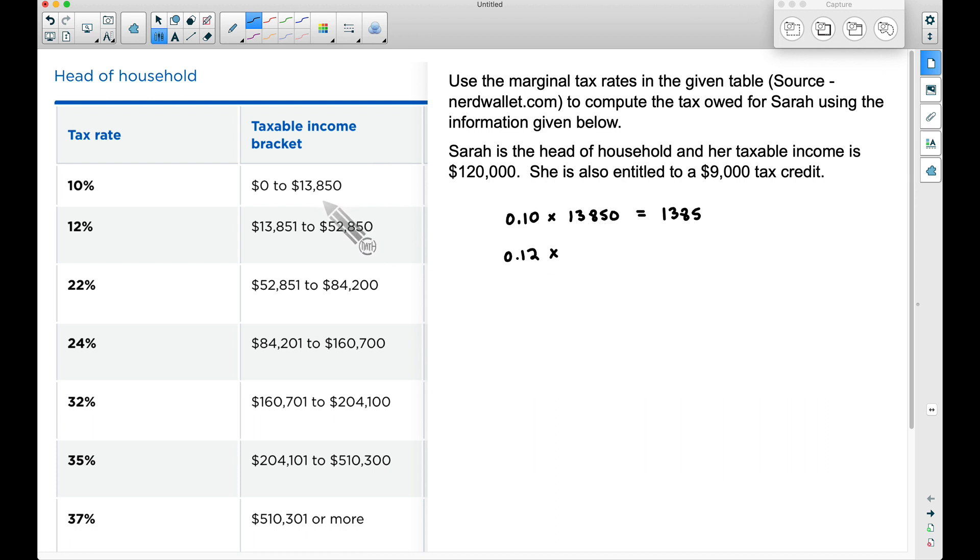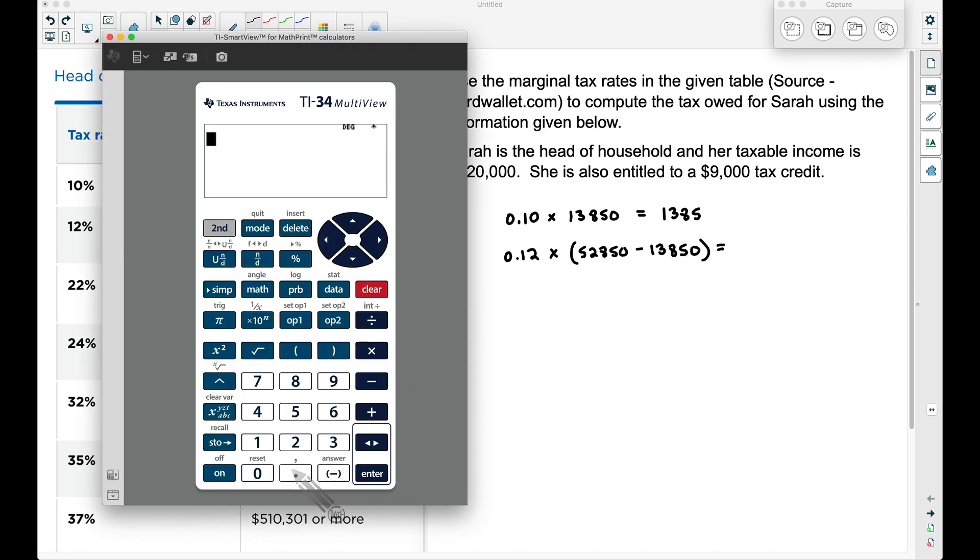We're not going to multiply by $52,850. You may say, well that's what we did up here, we just multiplied by this number. But what we have to bear in mind is that the tax owed on this $13,850 here, we've already computed that. She's going to pay 12% for any amount between this and this right here. So the way we do that is we take $52,850. She did make more than that so she's completely filling this bracket. But what we want to do here is subtract off the $13,850 because we have already computed the tax owed for that amount.